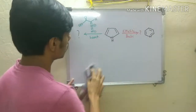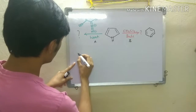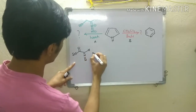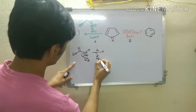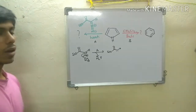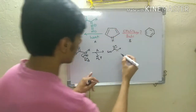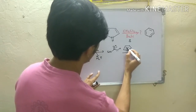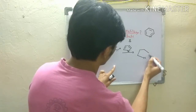Let us take condition A first. We have EtOOC-CHN2 (an ethyl ester diazo compound). When heat is given, it will decompose to give one molecule of nitrogen gas and a carbene. Due to the presence of this electron-withdrawing ester group, this carbene is actually an electrophilic carbene. When you react this carbene with pyrrole, it will insert into the double bond to give this intermediate compound.